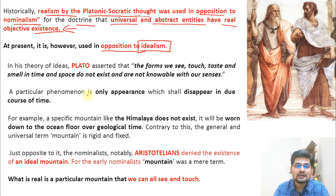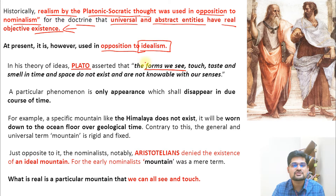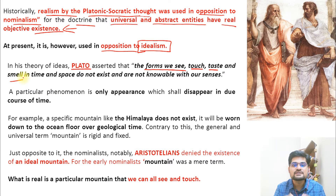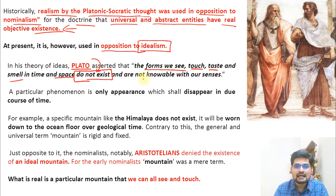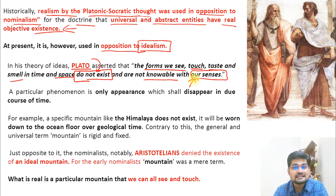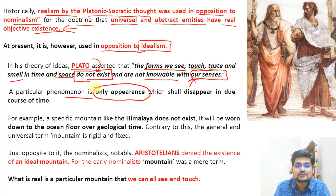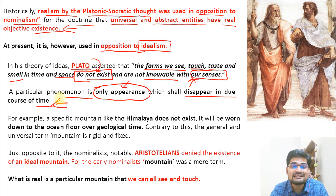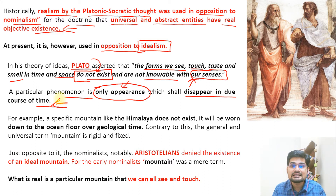Let's understand Plato's theory further. He asserted that the forms of anything we see — a mobile phone, a television, a table — anything we see, touch, taste, and smell, all perceived through our senses from the material world, do not truly exist in time and space according to Plato and are not fully knowable through our senses. He argued that our senses are incapable of seeing true reality because reality is something beyond what we see. A particular phenomenon is only an appearance — just the surface, which shall disappear in due course of time. This was the beginning of the idea of reality and beyond reality.